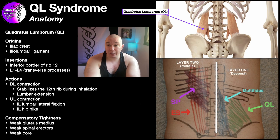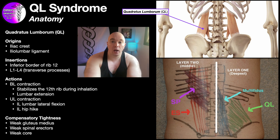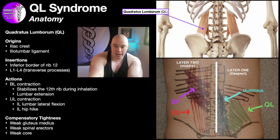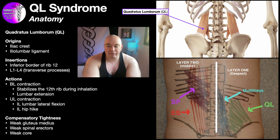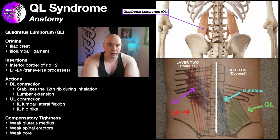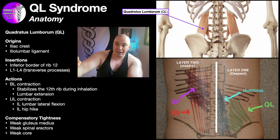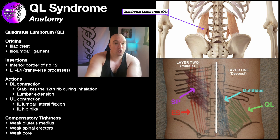In order to accurately diagnose somebody as having a tight QL or QL syndrome, we have to know where the QL is, and this is where palpation skill is going to come in handy. Looking at the surface anatomy picture at the bottom of the screen, that vertical white line is the midline — that's where the spine is — so the muscle is going to be lateral to that. It's more helpful to find the superior and inferior boundaries first. The superior boundary is the 12th rib, so you follow down and find the lowest rib — that's your superior boundary.